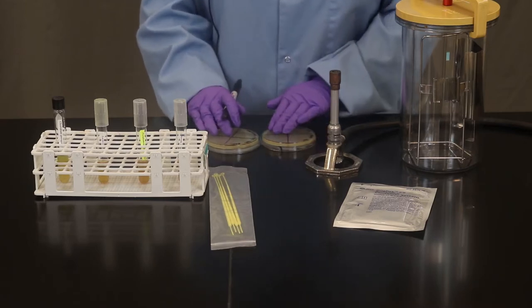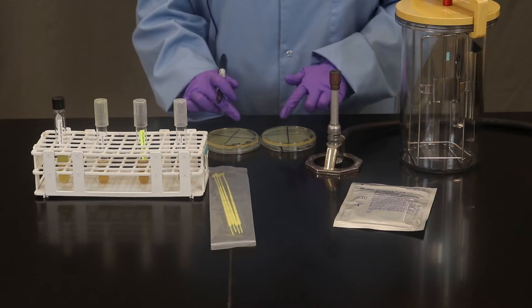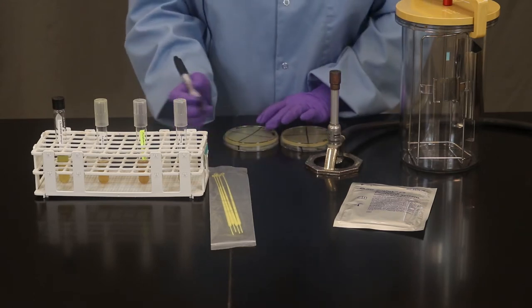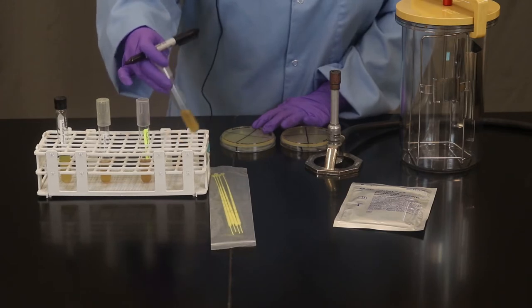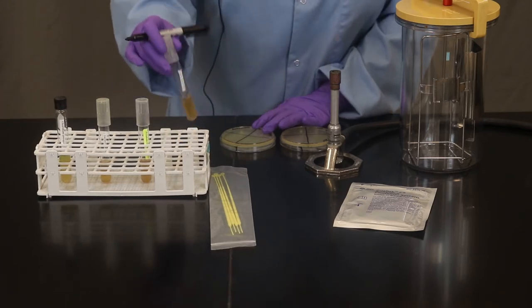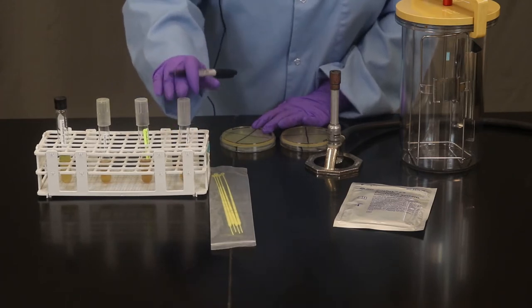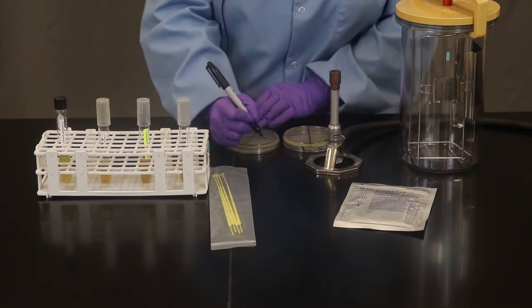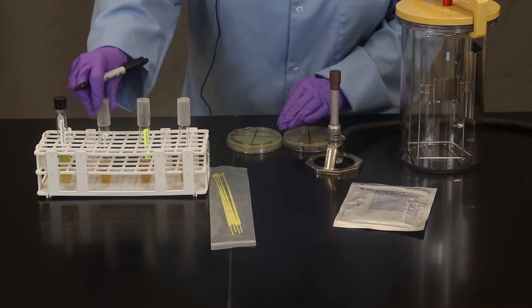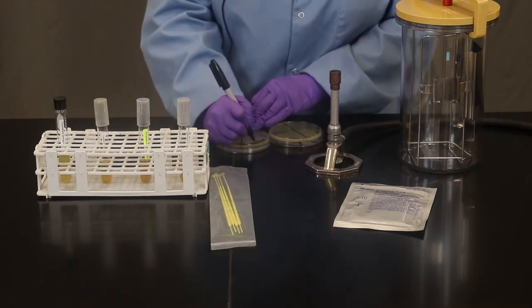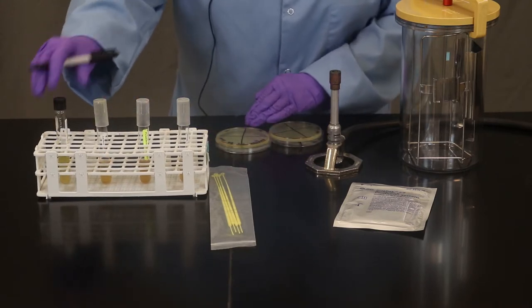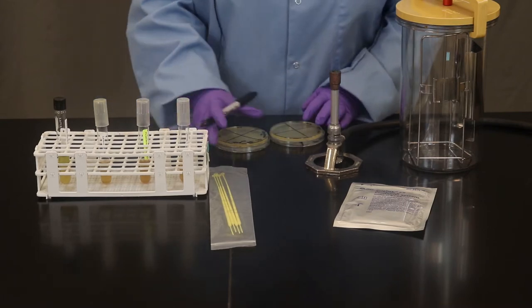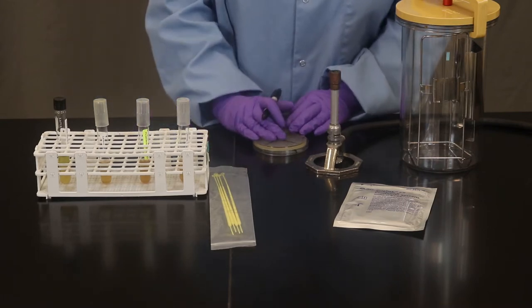In addition we're going to label each quadrant. One quadrant is going to represent each bacterium. Now instead of writing out the whole name Serratia liquefaciens I'm just going to write the initial. So I'm going to write SL, PA, LL, and CS. You can review the names in the lab manual again later. I'm going to repeat that for our other plate here.